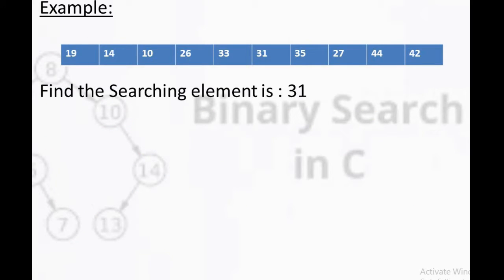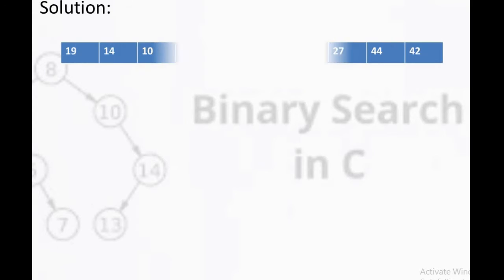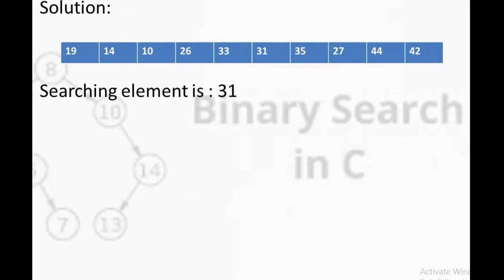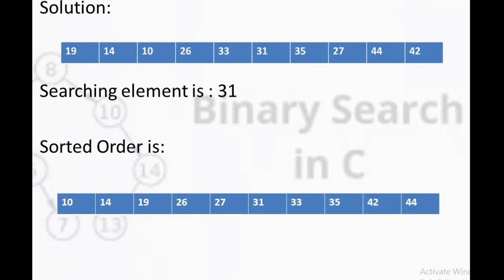This is the problem on binary search. Here, we have 10 elements and we have to find the element that we want. The solution part. We come into the first step, that is sorted order. This is the sorted order of the given element list, and 0 to 9 is the index value.